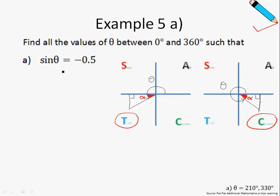Let's consider the two cases and find our basic angle alpha. To find the basic angle alpha, simply take the sine inverse of the number on the right-hand side of the equation. Take note: you will not take into account the negative sign. So to find alpha, take sine inverse of the number on the right-hand side without the negative sign. Punch this into your calculator — alpha is simply 30 degrees.